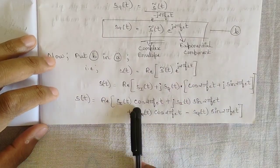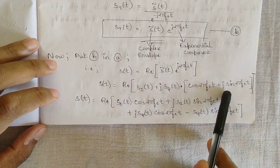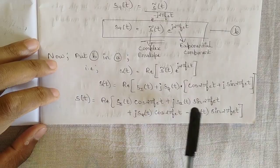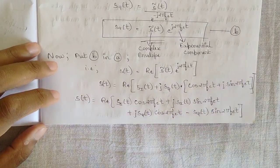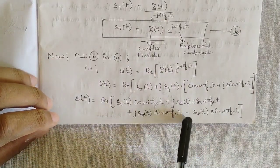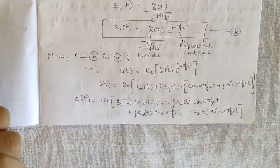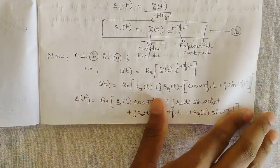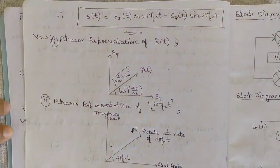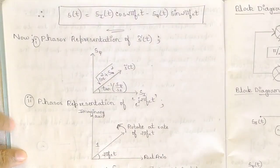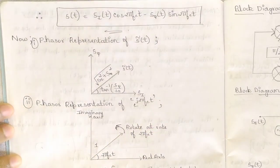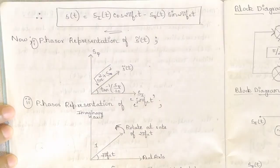Expanding: s_i(t)·cos(2πf_c·t) + j·s_i(t)·sin(2πf_c·t) + j·s_q(t)·cos(2πf_c·t) − s_q(t)·sin(2πf_c·t), since j² = −1, giving the negative sign. Taking the real part, the final canonical representation is: s(t) = s_i(t)·cos(2πf_c·t) − s_q(t)·sin(2πf_c·t).